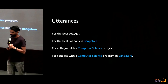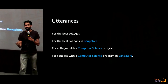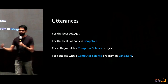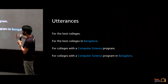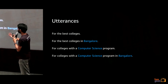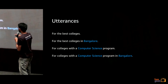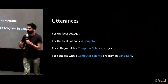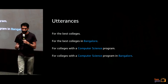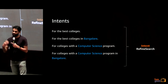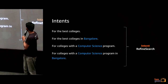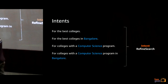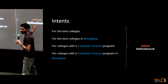Here's another example with a college finder skill. A user can say 'ask college finder for the best colleges,' 'for the best colleges in Bangalore,' 'for colleges with the computer science program,' or 'for colleges with the computer science program in Bangalore.' These are different ways of saying the same thing — finding a college. We're trying to be adaptable to what the user can say, and all of these should match to an intent you as the designer or developer define — let's call it 'refine search.'